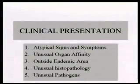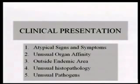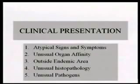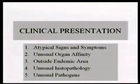Some of the problems you're going to have: the signs are atypical, like pulmonary sporotrichosis — twenty years ago nobody would have thought about it. Unusual organ affinity — blastomycosis goes to the bone and prostate, but you're going to find it somewhere else. Outside the endemic area, unusual histopathology, and unusual pathogens.